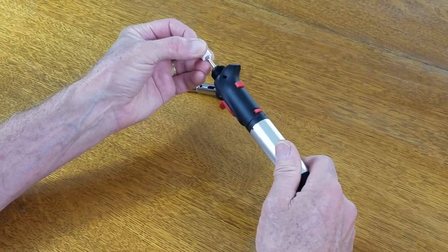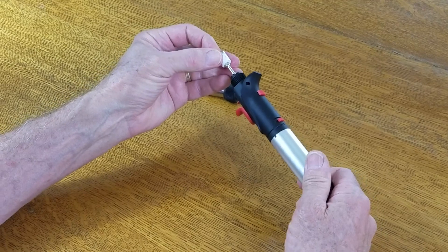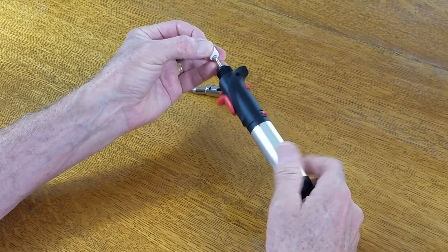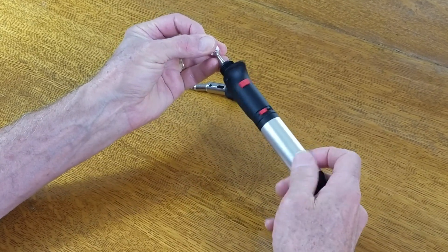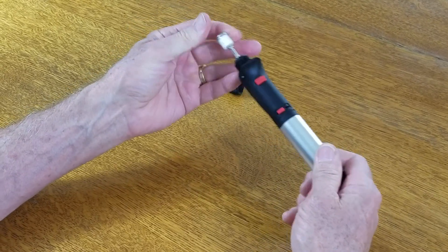Basically, you just have to hold it down with your finger like that and screw it on there. Once you get it started, it'll tighten up.